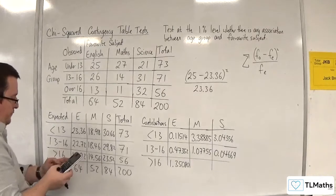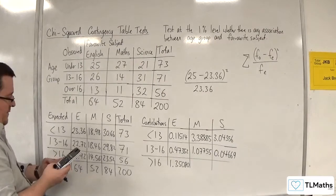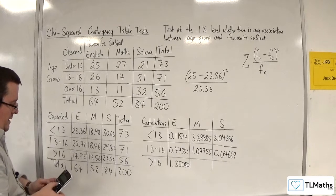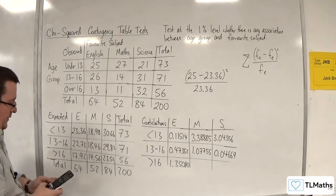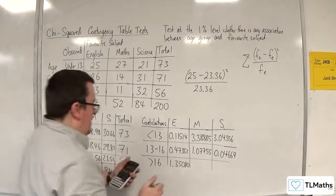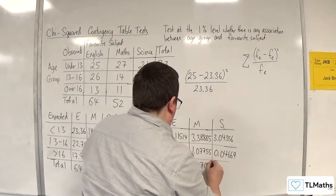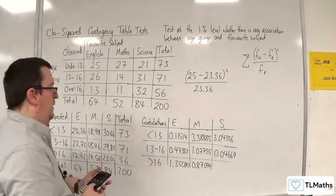That one next. We've got 11 take away 14.56, squared, divided by 14.56. We get 0.87044.